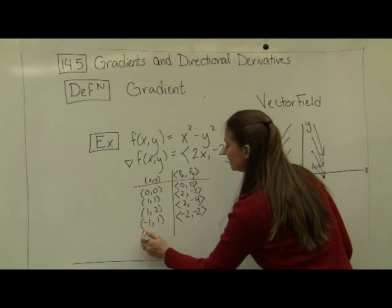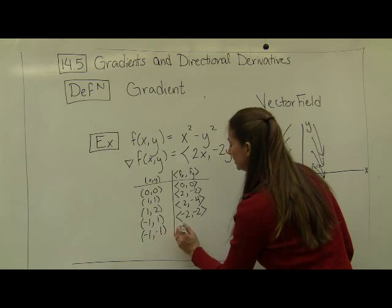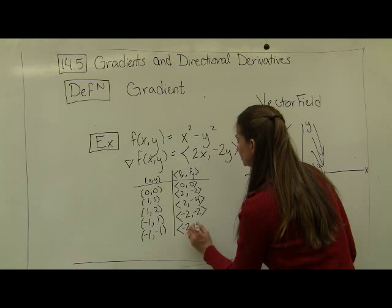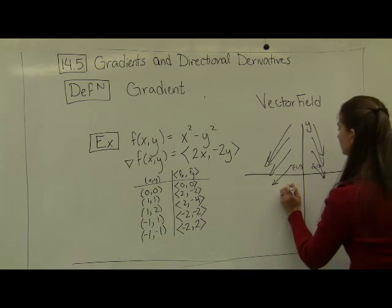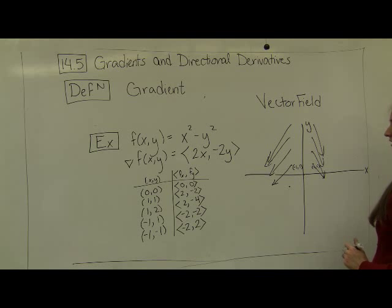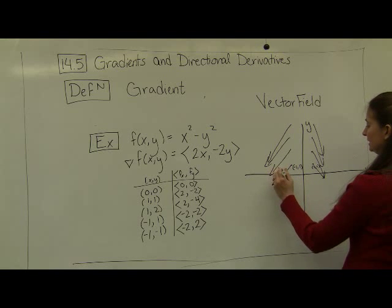Next, I could try plugging in the point negative 1, negative 1, which now gives me the vector negative 2, positive 2. So starting at the point negative 1, negative 1, my vector is now pointing up this way.